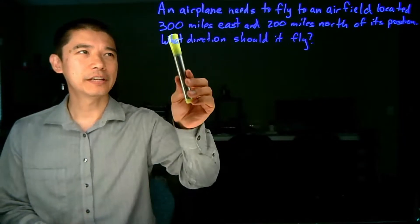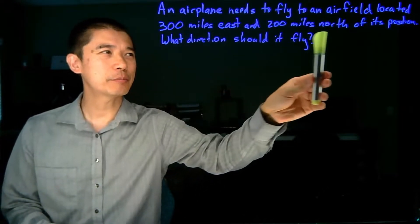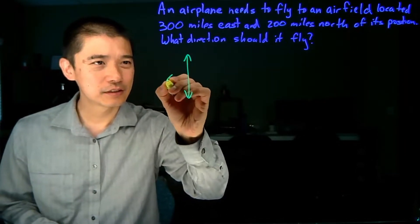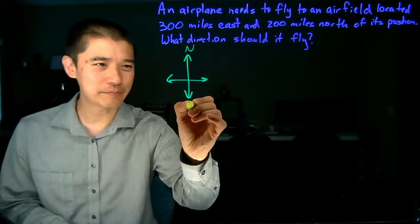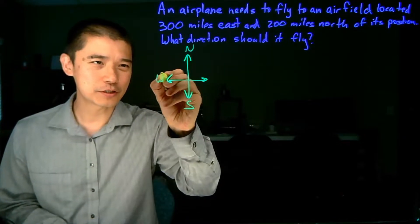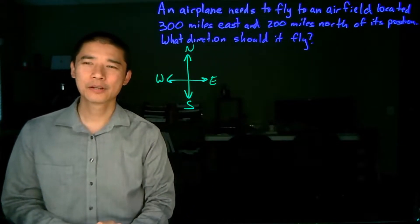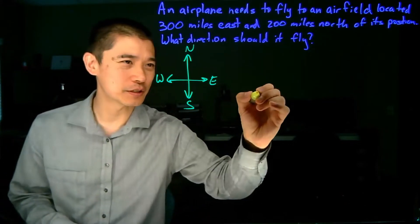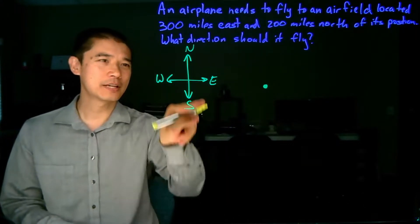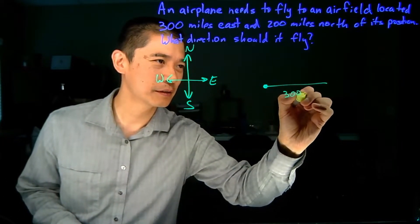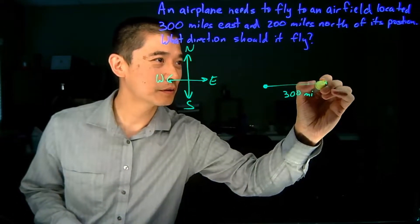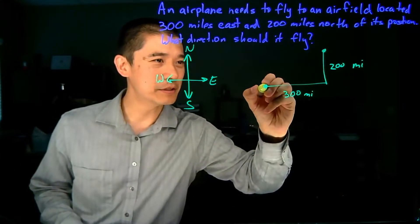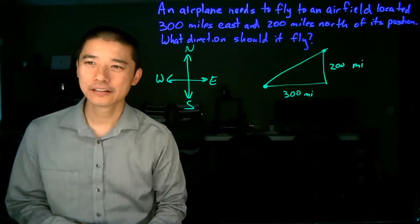So here's an example. An airplane needs to fly to an airfield located 300 miles east and 200 miles north of its position. What direction should it fly? So we'll start off with something basic: the directions of a compass. North is up typically, south is down, west is over here, and east is over there. This is just giving us an orientation. Now we need to make sure we read the words: 300 miles east and 200 miles north of its current position. So let's say this is the current position, 300 miles east is 300 this way, and then 200 miles north. And here is where that airfield is located, and we need to figure out what direction it's flying.